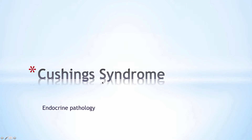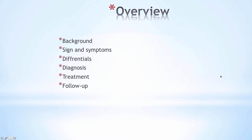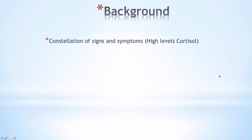Hi and welcome back to Sansamed. In this video we'll be talking about Cushing syndrome — our first video in a series regarding endocrine pathology. Essentially, Cushing syndrome is a constellation of signs and symptoms related to high levels of cortisol.